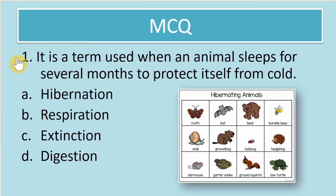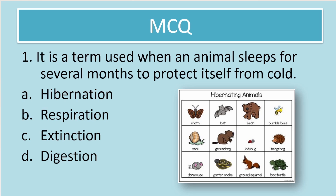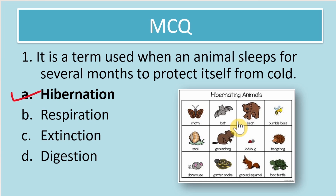The first question is an MCQ. It is a term used when an animal sleeps for several months to protect itself from cold. The options are hibernation, respiration, extinction, and digestion. The correct answer is hibernation. Some animals like moths, bats, and bears sleep for several months to protect themselves from severe cold.